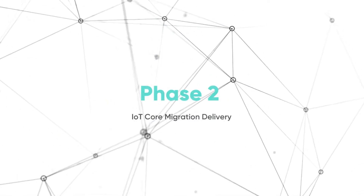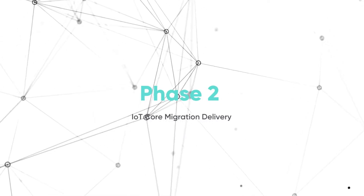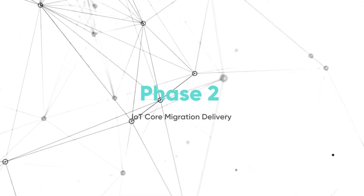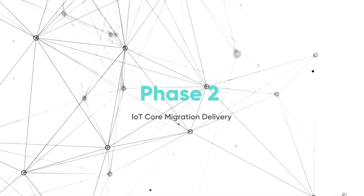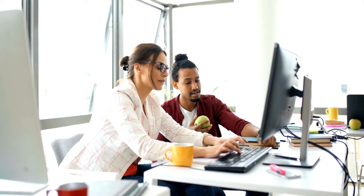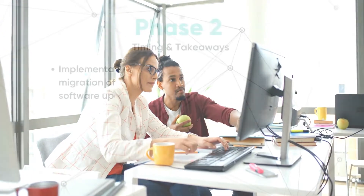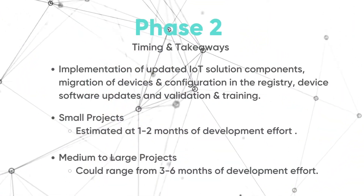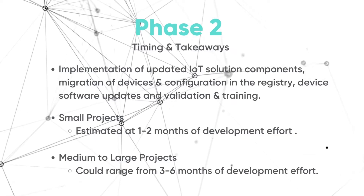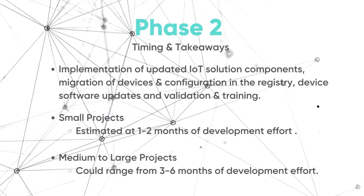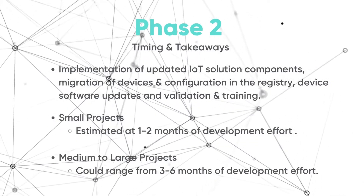Phase two: IoT Core migration delivery. Phase two includes the implementation of updated IoT solution components, migration of devices and configuration in the registry, device software updates, and validation and training. Small projects are estimated at one to two months of development effort. Medium to large projects can range from three to six months of development effort.